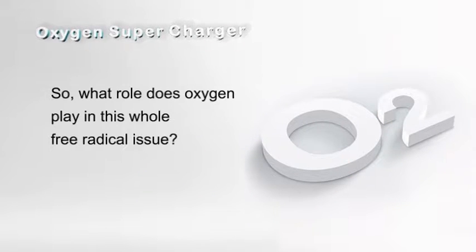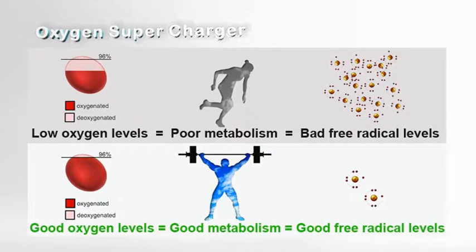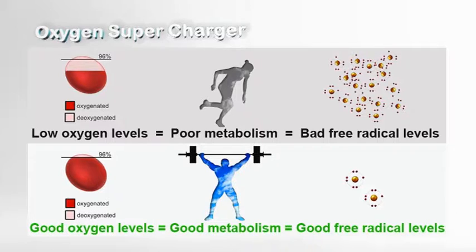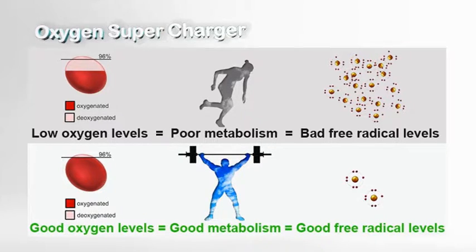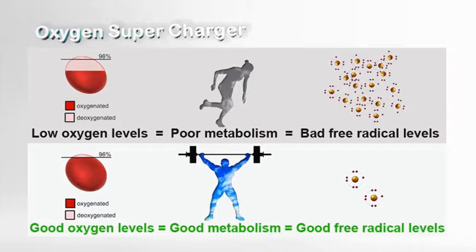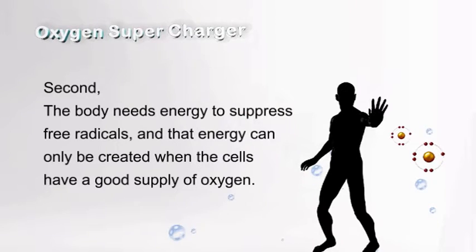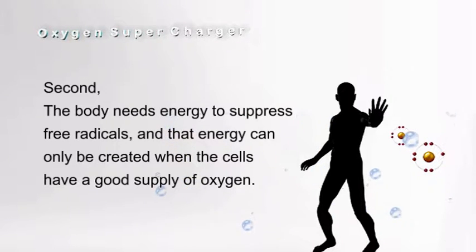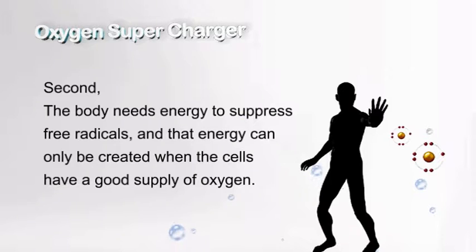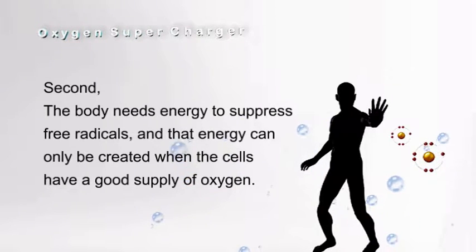So what role does oxygen play in this whole free radical issue? First, oxygen levels in the blood affect the body's metabolism. That, in turn, affects the levels of free radicals. The better your oxygen level, the better your metabolism and the better your free radical level will be. Second, the body needs energy to suppress free radicals, and that energy can only be created when the cells have a good supply of oxygen.